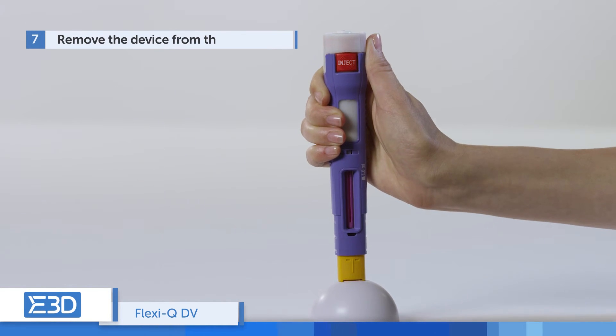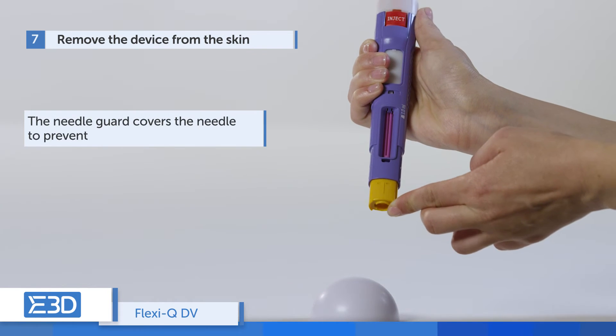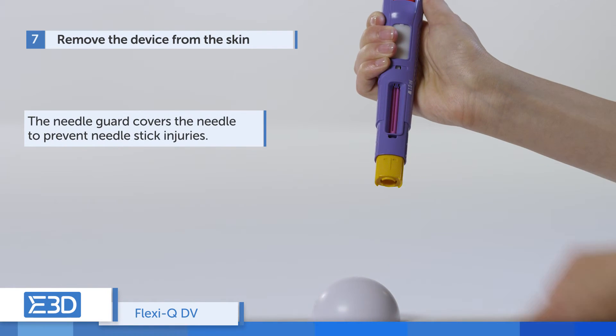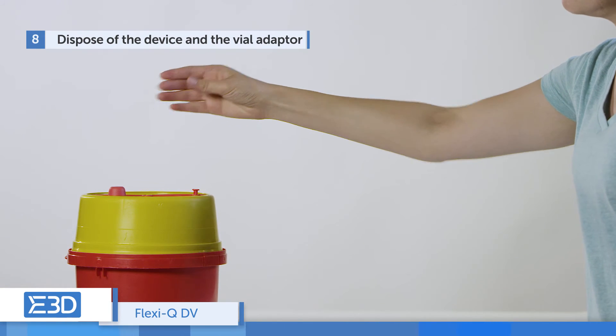Remove the device from the skin. The needle guard moves forward and covers the needle to prevent needle stick injuries. Dispose of the device and vial adapter in a sharps container.